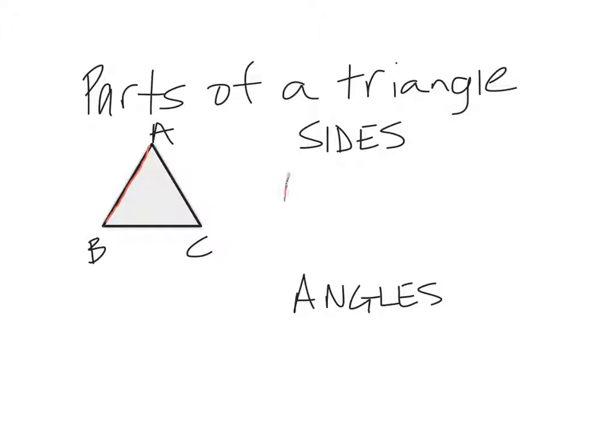So I have side AB, and since that's a segment, we put the segment mark over it. We have side BC, and then we have side AC or CA. Now I can flip all of those around and make it BA, CB or CA, which doesn't matter if I have one triangle.